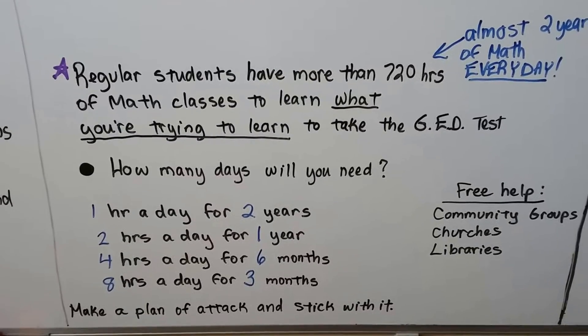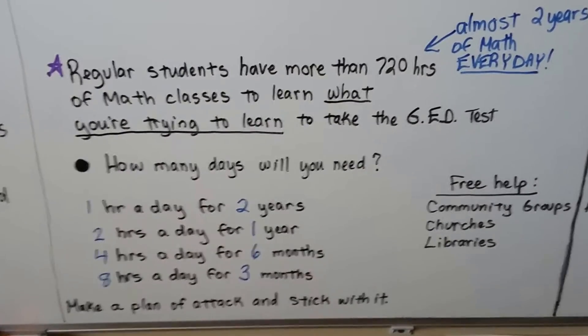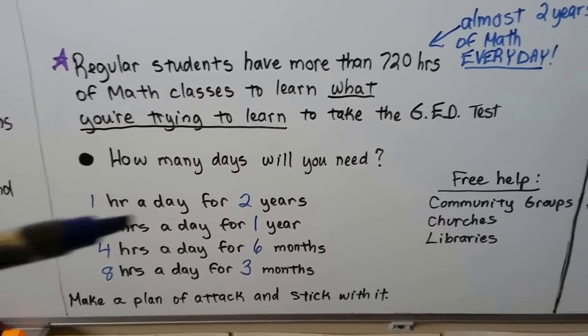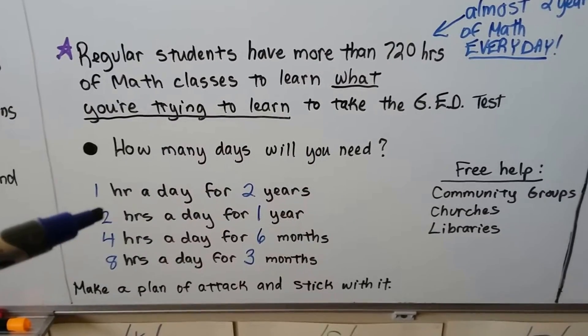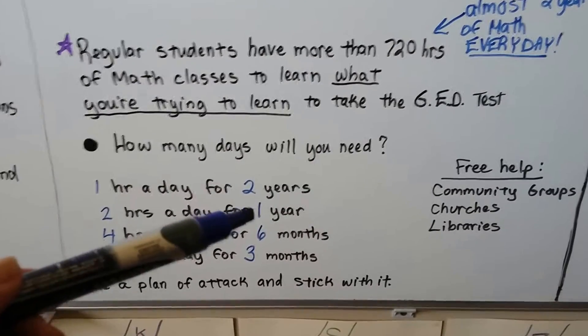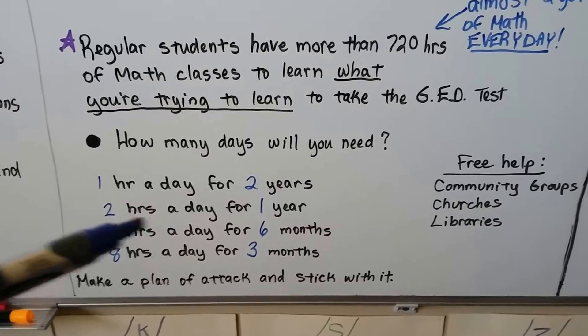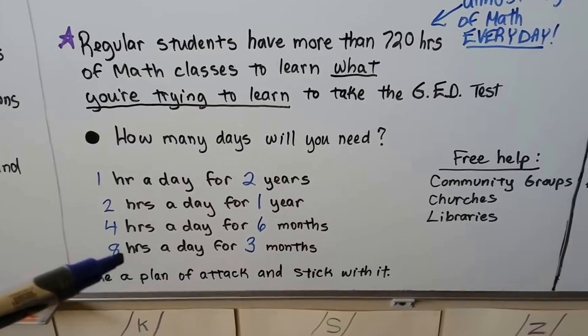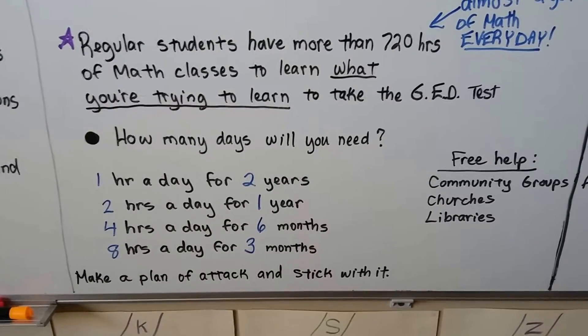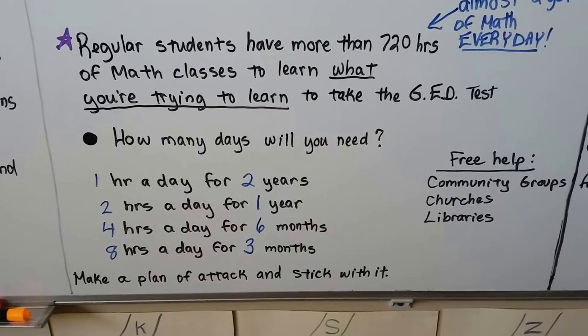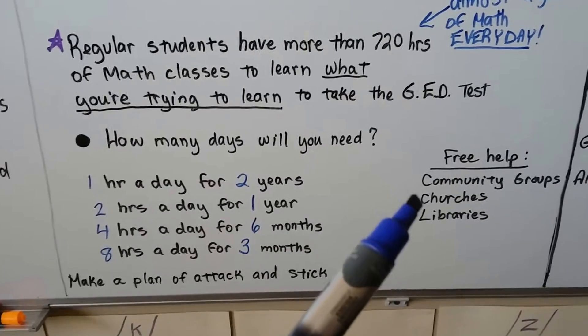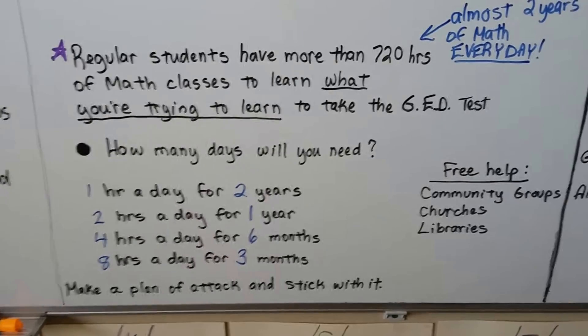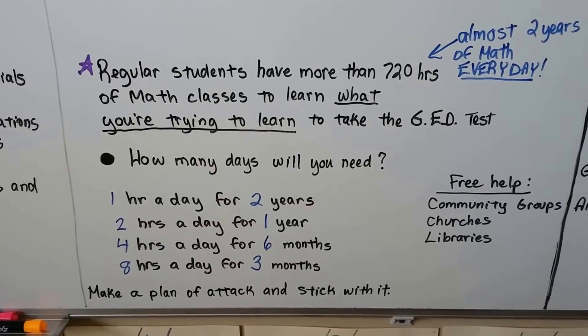So how many days will you need to do this? Well, if you stuck with their schedule, one hour a day for two years would do it. If you want to cut that in half to one year instead of two, you'd have to do two hours a day. And if you want to cut that year in half to six months, well, then you better do four hours a day. And if you want to cut that in half to three months because you're really in a hurry to get your GED, then you better be doing eight hours a day. And you don't need an expensive tutor. There's free help with community groups and churches and libraries. They have volunteers that come in for free to help you.